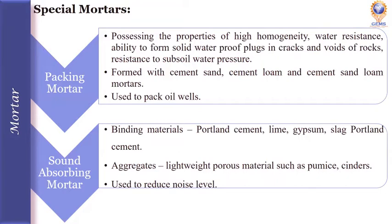The next type of special mortar is sound absorbing mortar. Sound absorbing mortars are prepared with Portland sand, lime, gypsum, or slag Portland cement as the binding material, and lightweight porous aggregates such as foam, ice, or cinders are used. These sound absorbing mortars are used to reduce noise levels.